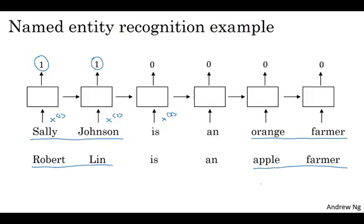One of the most interesting cases will be, what if in your test set, you see Robert Lin is a durian cultivator. A durian is a rare type of fruit popular in Singapore and a few other countries. But if you have a small labeled training set for the named entity recognition task, you might not even have seen the word durian or seen the word cultivator in your training set.